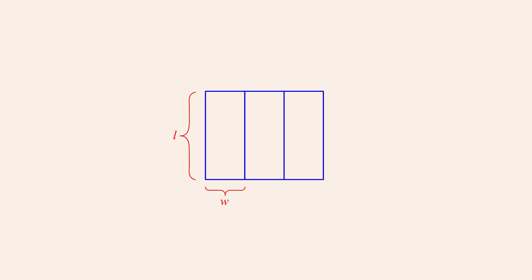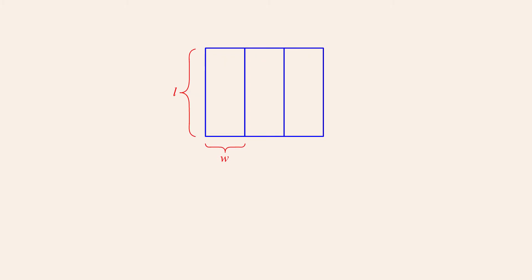We can then create two equations, each of which states one relationship between the variables. The first equation states that the four length segments plus the six width segments equals 180 feet. The second equation states that the length of a pen is twice its width plus three feet. This gives us a system of two equations in two variables. Solving this system using the elimination method, we first rewrite the second equation so that both equations are in standard form.